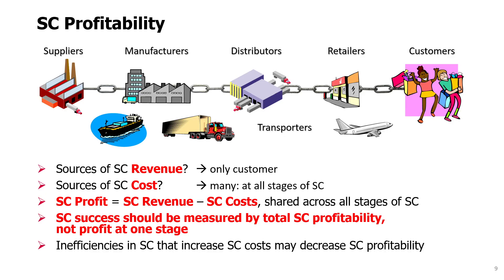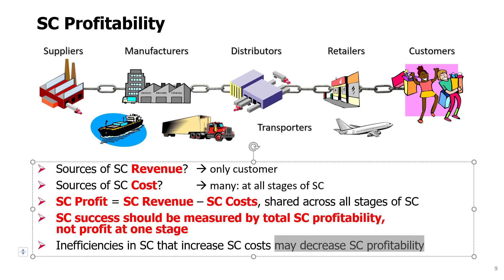The success of a supply chain will be defined and measured by total supply chain profitability, not profit at one stage only. We have to recognize that inefficiencies at just one stage — whether it's supplier, manufacturer, distributor, retailer, or transportation — any inefficiency in the supply chain that increases costs may indirectly decrease supply chain profitability.